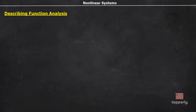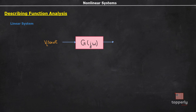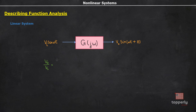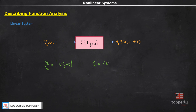Let's see how describing functions are developed. Remember how we describe the transfer of a linear system. Suppose we give an input v_i sin(ωt) to the system and wait until the system reaches steady state — that is, until all the transients have settled. If the system is linear, the output will again be a sinusoid of the same frequency as the input. The only difference will be in the amplitude and phase. The output v₀ will be some scaled value of the input v_i, and θ shows the phase difference. If we characterize the linear element with its transfer function G where s = jω, then v₀/v_i equals the magnitude of G(jω), and the angle between input and output sinusoids equals the angle of the complex variable G(jω).